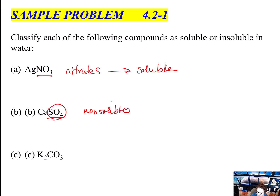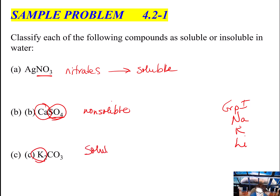And then potassium carbonate — remember that if it's in group one (sodium, potassium, lithium), it's always soluble, no matter what it's hooked to. It's a good idea to print off the exam resource pages if you're in my class, or look at the solubility tables provided. Potassium, sodium, lithium — those are always soluble, so if you see one, you know it's going to be soluble and you can look at the other compound that might be formed.